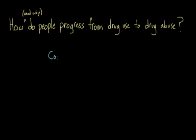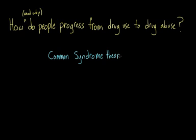The first model I want to talk about is the common syndrome theory, which is also sometimes called the problem behavior theory. This theory revolves around the idea that maybe there is one single underlying factor — a drug use propensity — that might put people at a higher risk for abusing substances. But this is really deterministic. It kind of implies that anyone who has a drug use propensity will develop substance abuse problems, and that seems pretty severe.